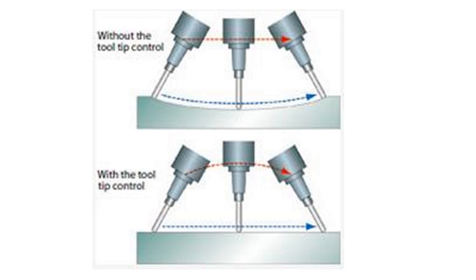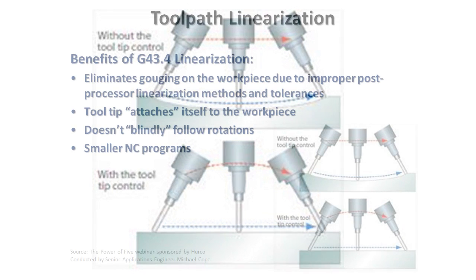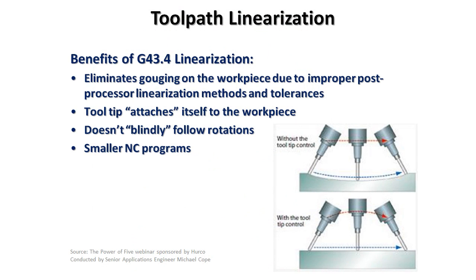And to accomplish that, it not only has to move the B-axis, but it has to raise the Z-axis as well and then bring it back down in concert as the B-axis is rotating, giving us that straight line linearized move.